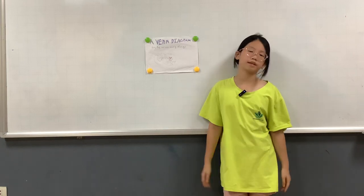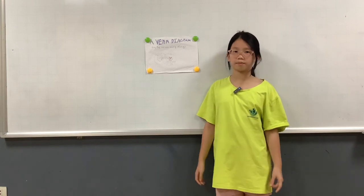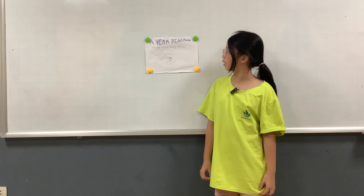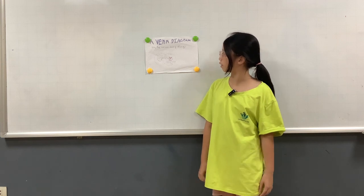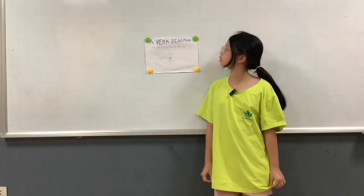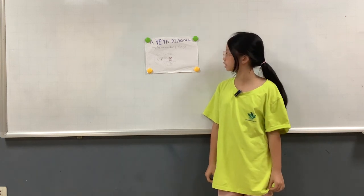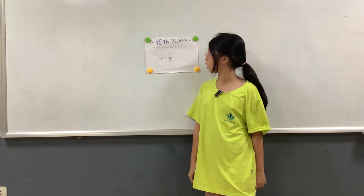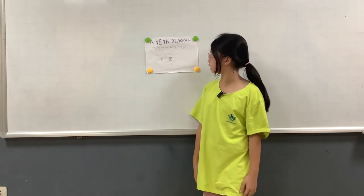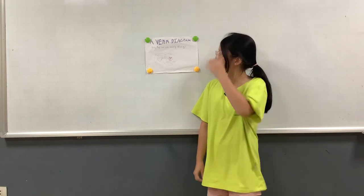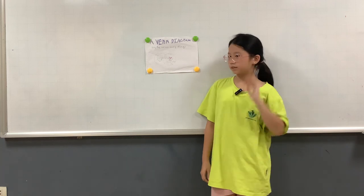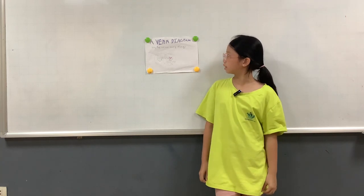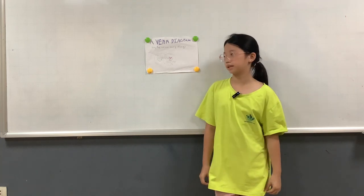Hello everyone, my name is Nhật Linh. Today I am going to talk about a Venn diagram. This is my Venn diagram, a living thing and a non-living thing. The living thing is a hamster and the non-living thing is dishes.